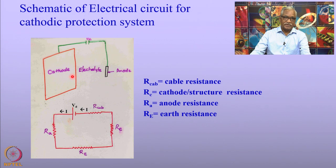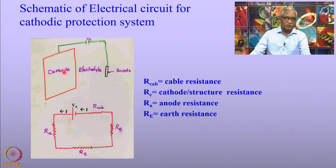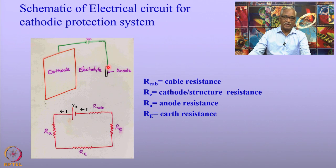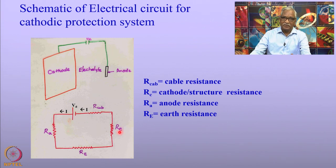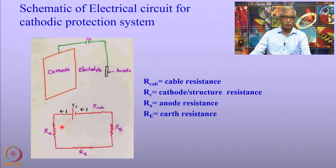Coming back to cathodic protection of structures, you notice that the current source — the anode — dissipates current in the soil, and then the current travels to the cathode and goes back to the rectifier. This current flow can be represented by a simple equivalent circuit consisting of several resistors: the resistance offered by the cable, the cathode, the electrolyte, and the anode. All these resistances are in series, offering resistance for the flow of current in cathodic protection of engineering structures.